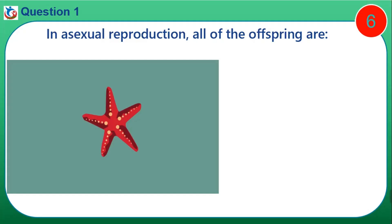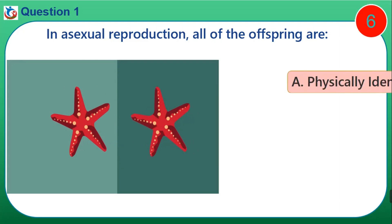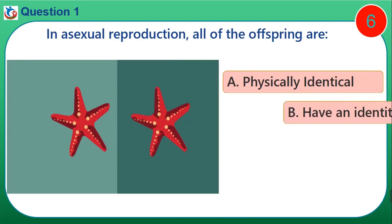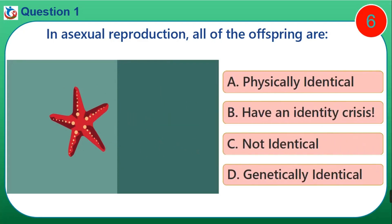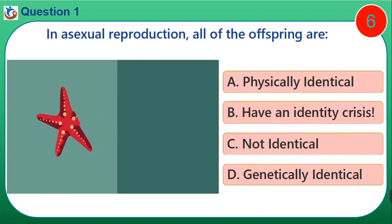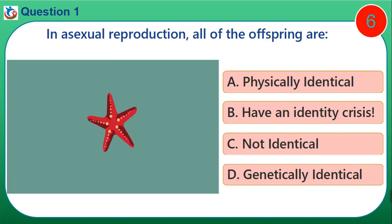Question 1. In asexual reproduction, all of the offspring are: A. Physically identical. B. Have an identity crisis. C. Not identical. D. Genetically identical.